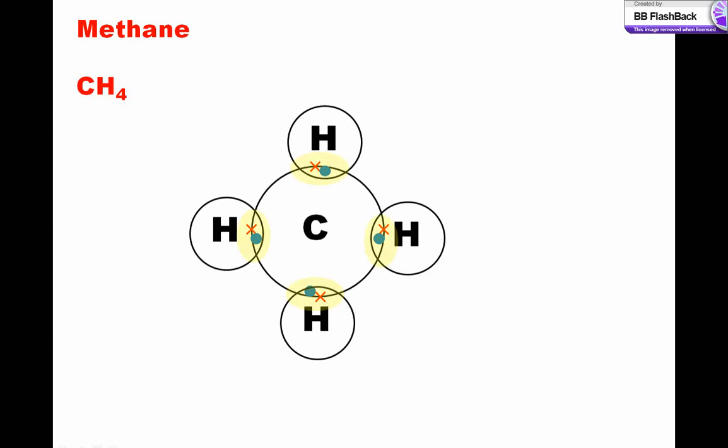We look at the electrons. We have 4 pairs of bonding electrons. These electrons will repel each other equally, and so the bonds will space themselves out as far as possible.